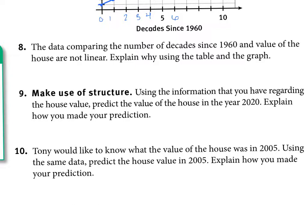Number nine: using the information about housing value, predict the value of the house in the year 2020. We already found the value in 2010 was $320,000, and we know it doubles every 10 years. So doubling $320,000 gives $640,000 — the predicted value in 2020 is $640,000.